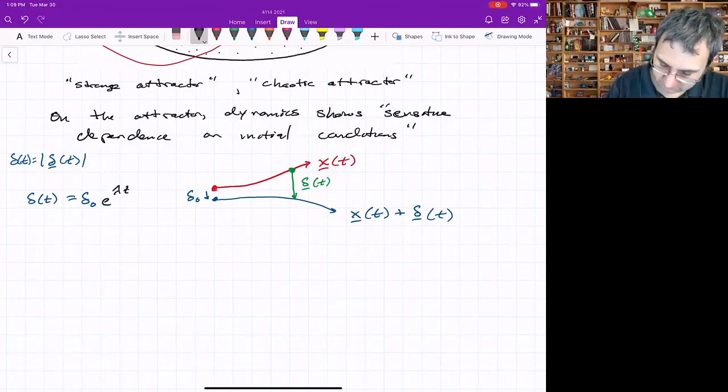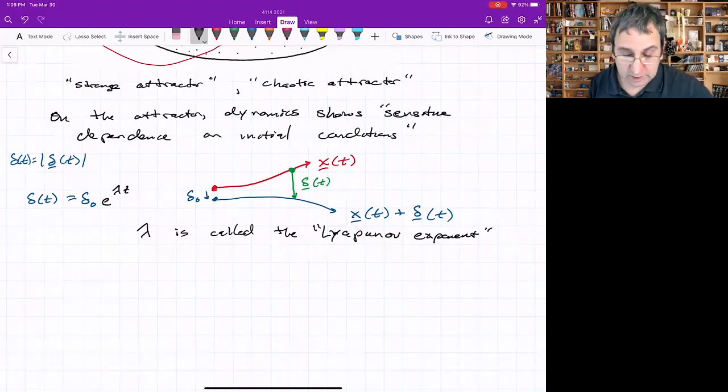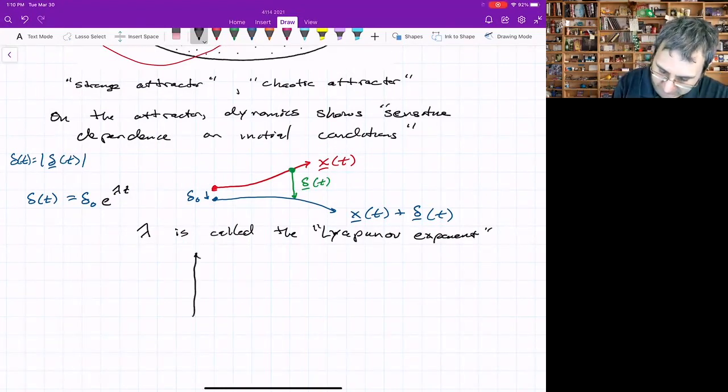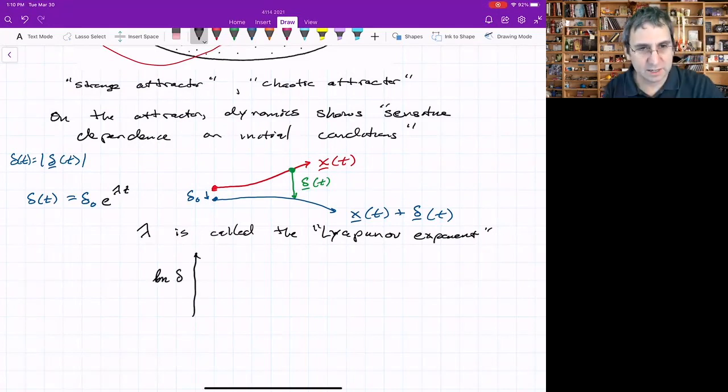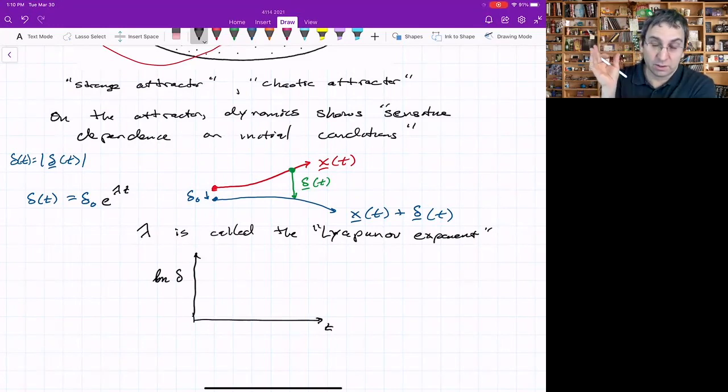Lambda is called the Lyapunov exponent. And the way that you would get it is you could plot the natural log of that distance as a function of time. Just take two initial conditions that are, as far as you could tell, on the attractor and just plot this distance between them.